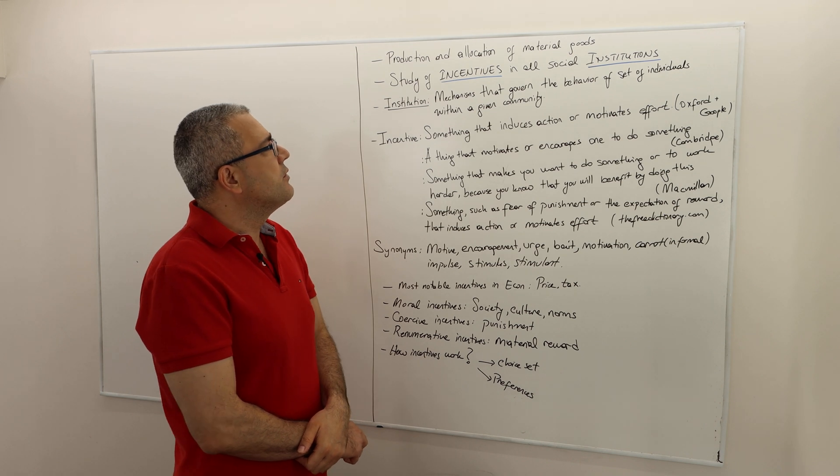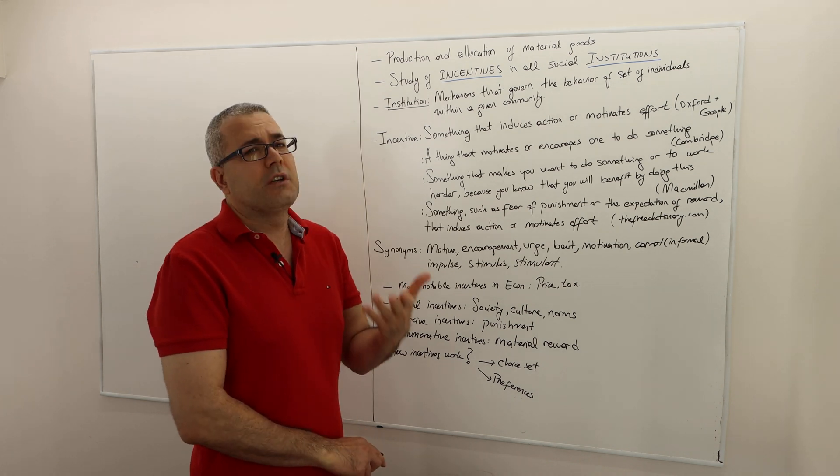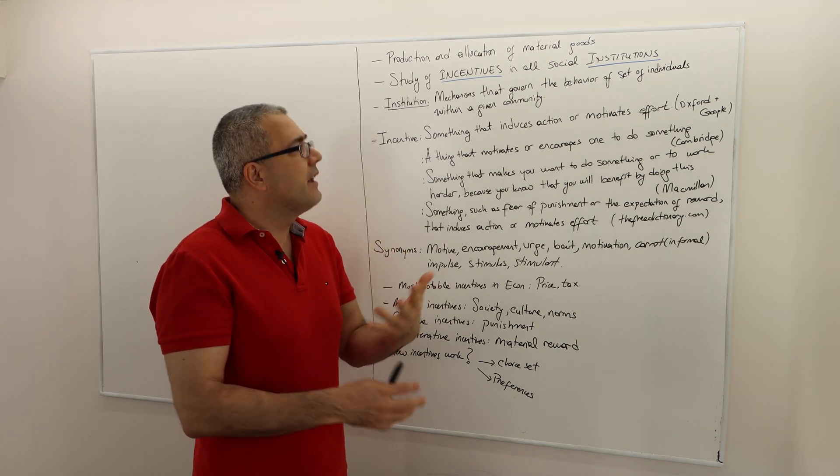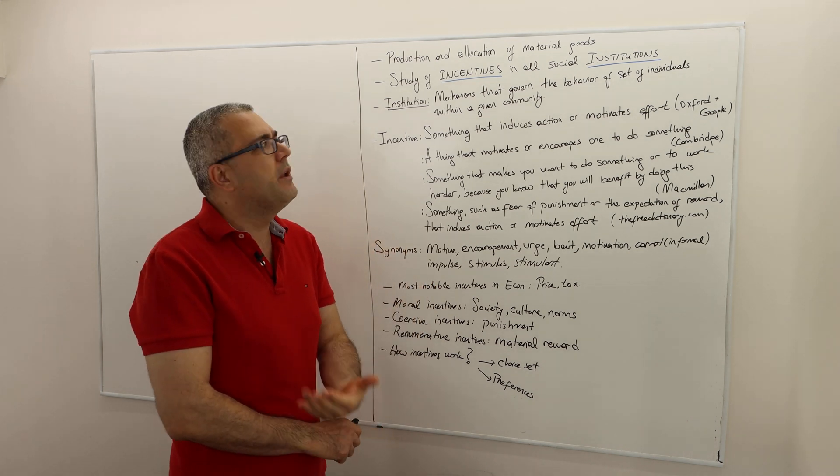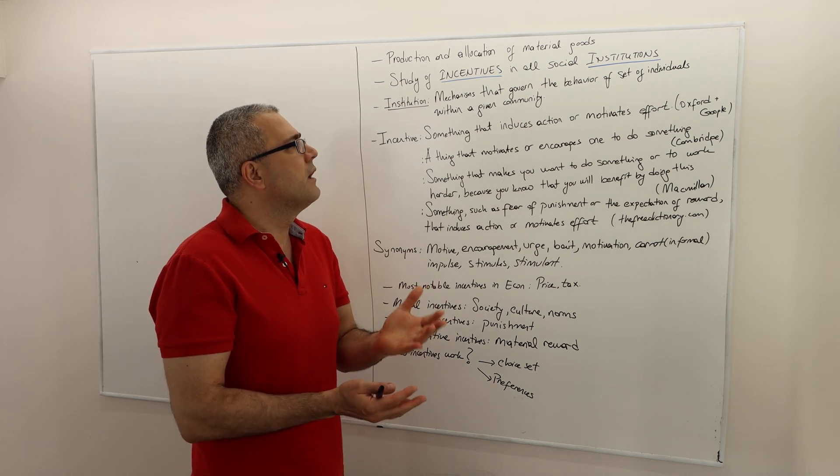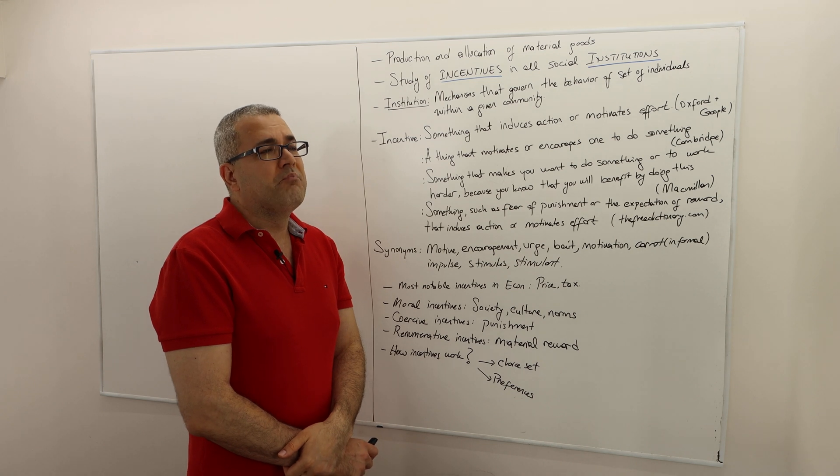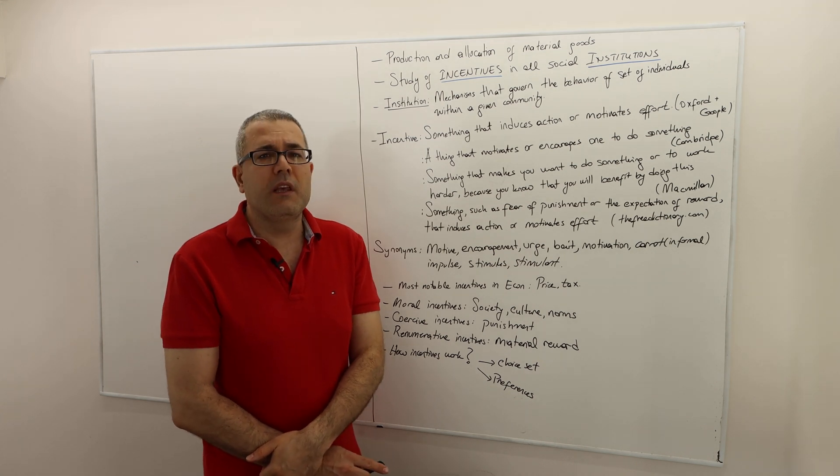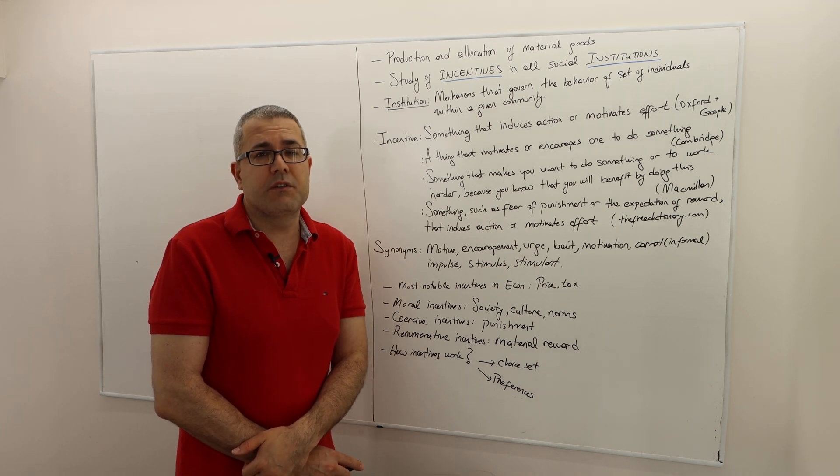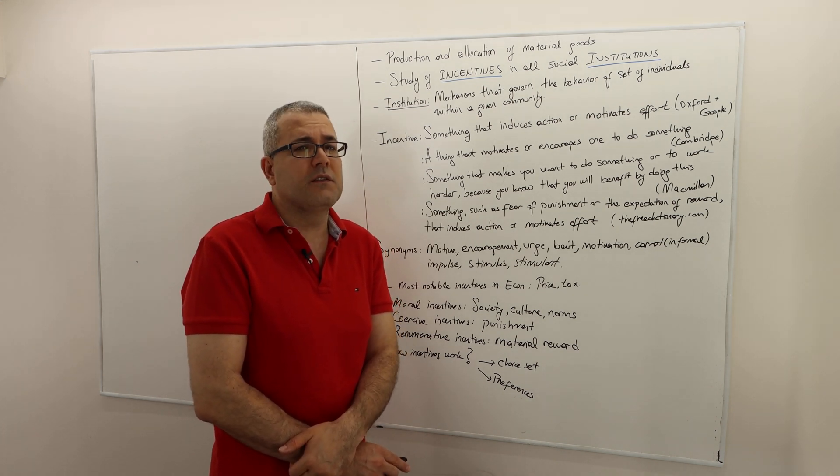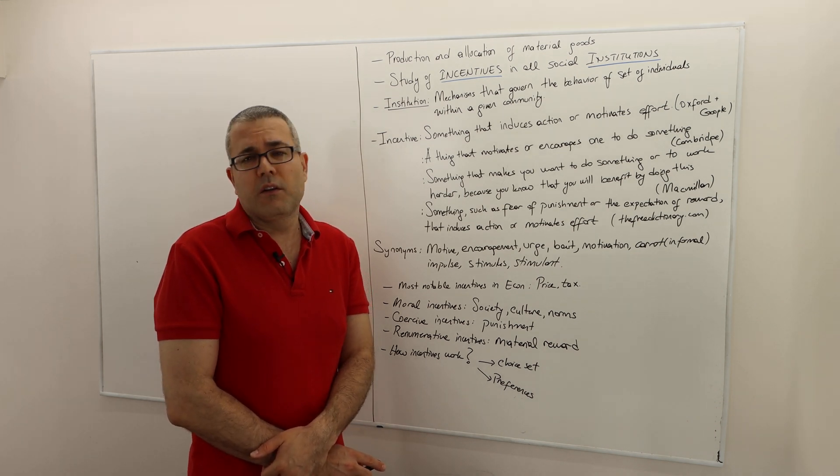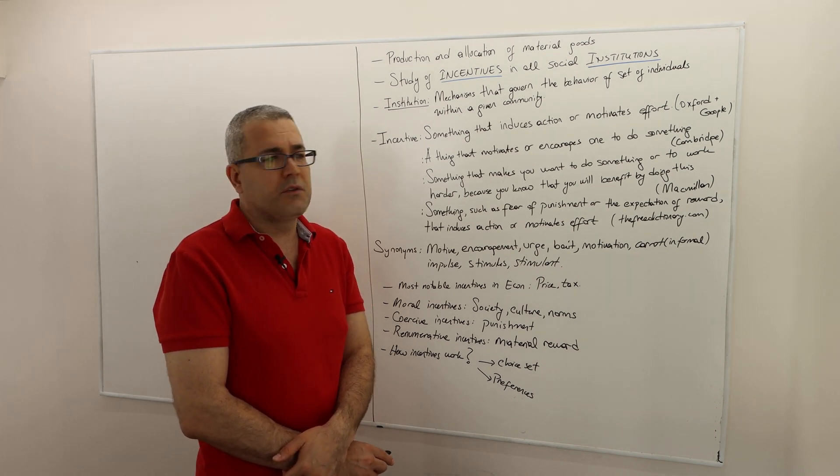Let's start with institution. What do we mean by social institution? An institution is a mechanism that basically governs the behavior of a set of individuals within a given community. Broadly speaking, a college, a university, a hospital, a bank—these are all institutions. Are they social institutions? Well, depending on the context, yes they are.